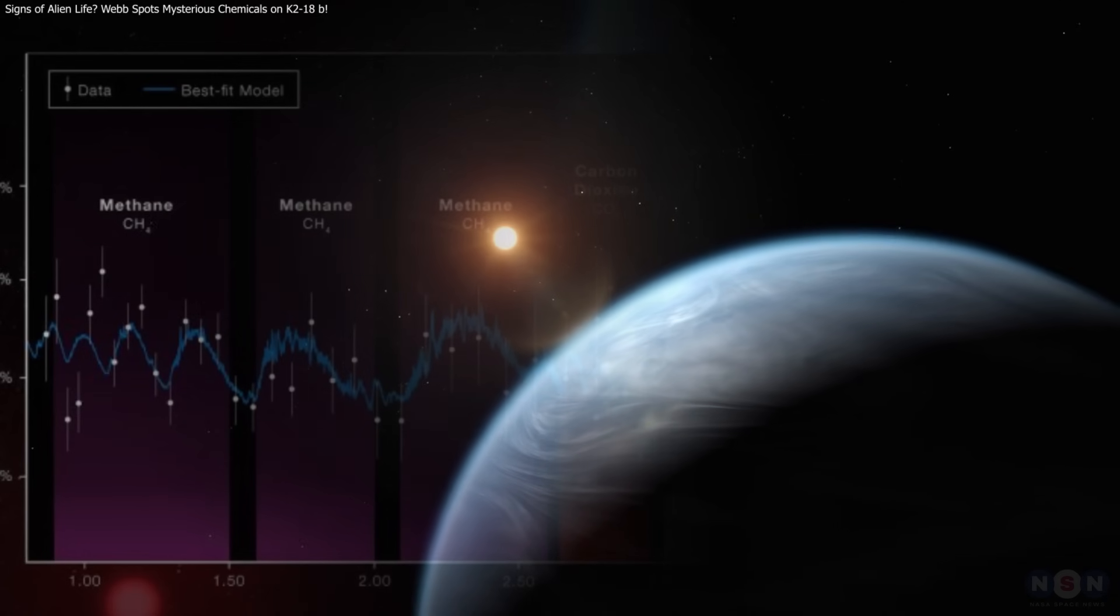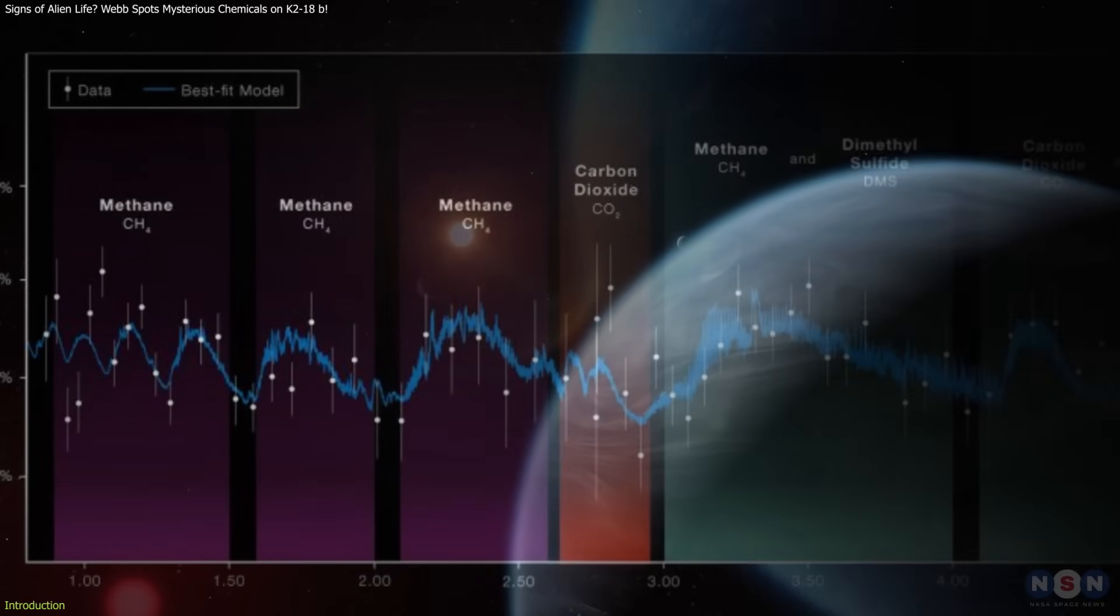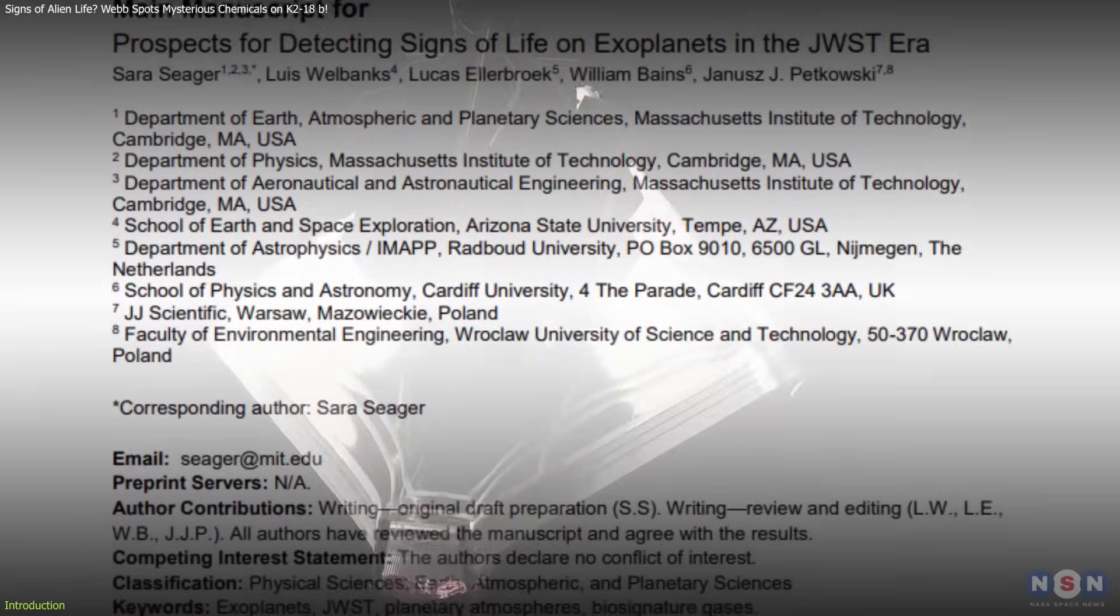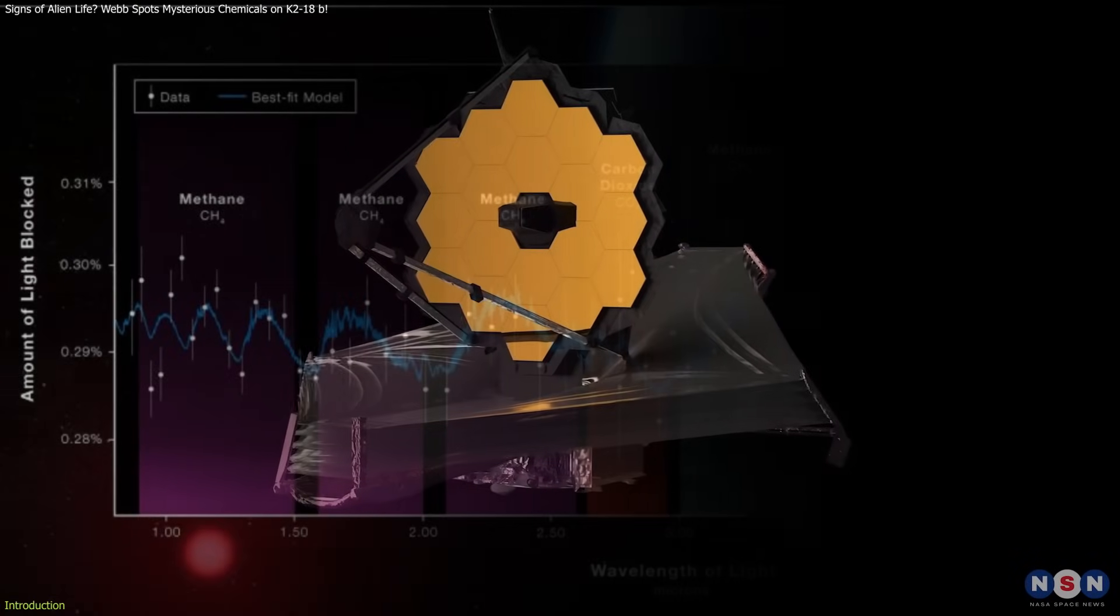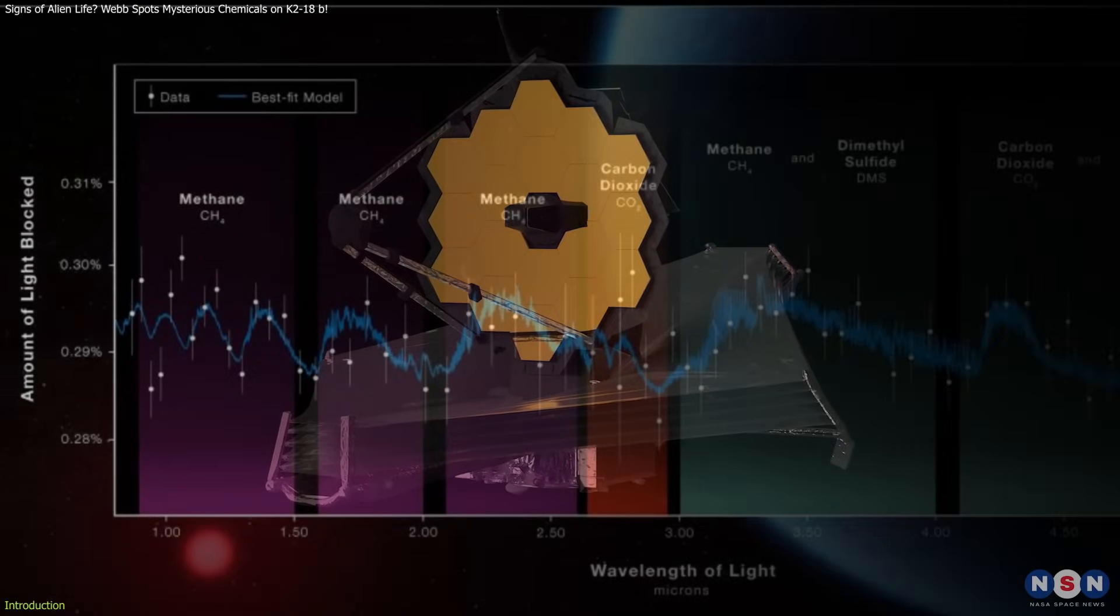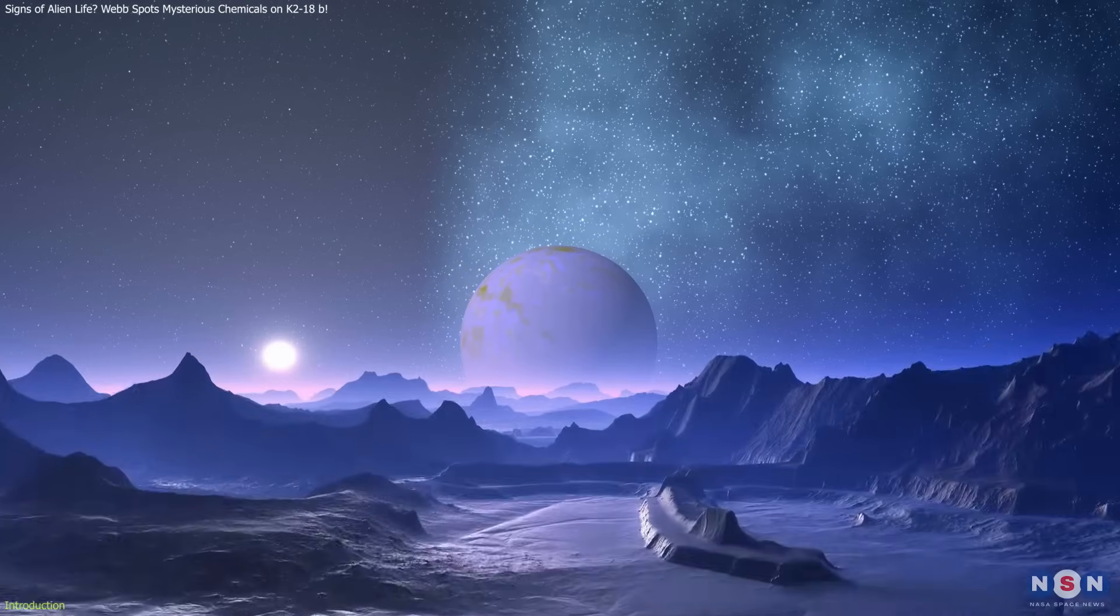Could this be the moment we first glimpse signs of life beyond Earth? In a groundbreaking discovery, the James Webb Space Telescope has detected chemical compounds in the atmosphere of a distant exoplanet that may hint at alien biology.